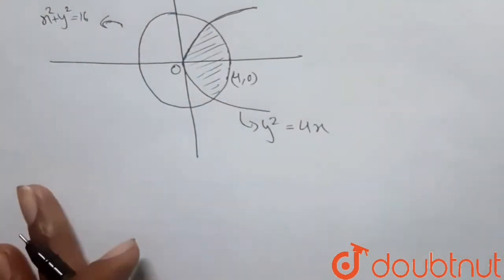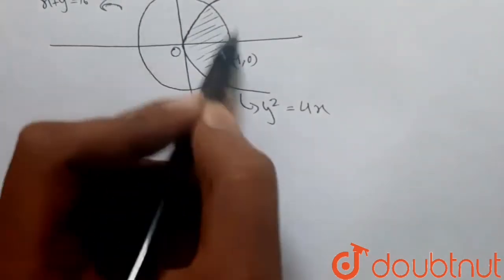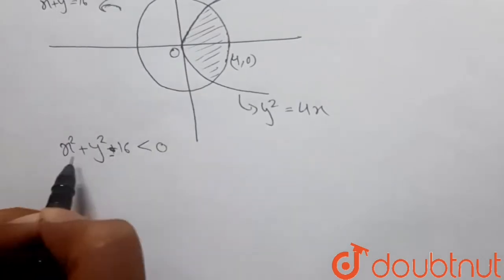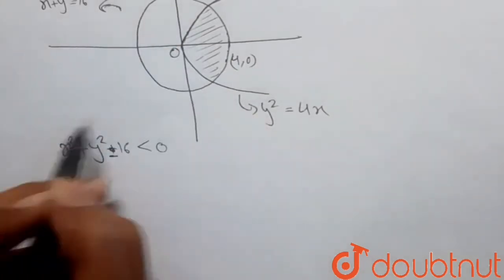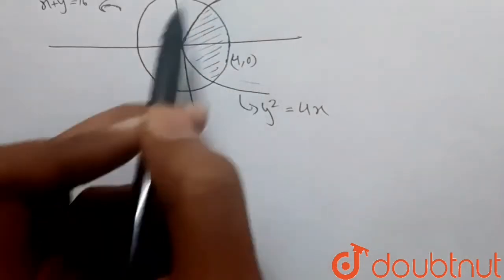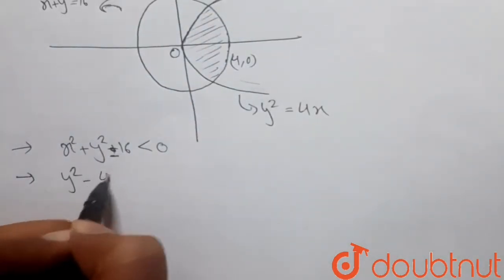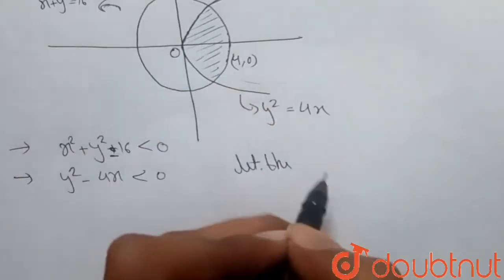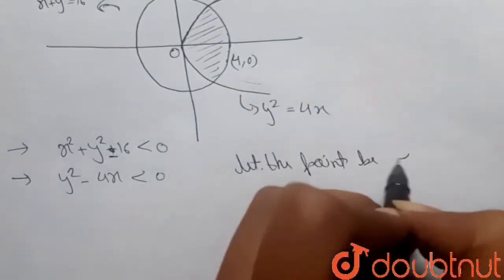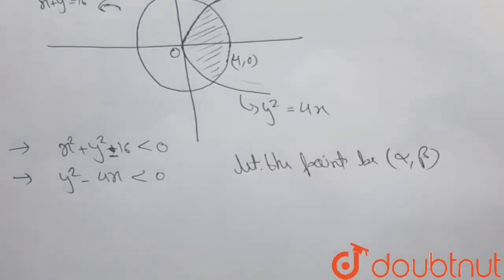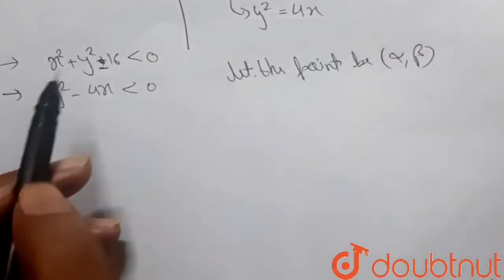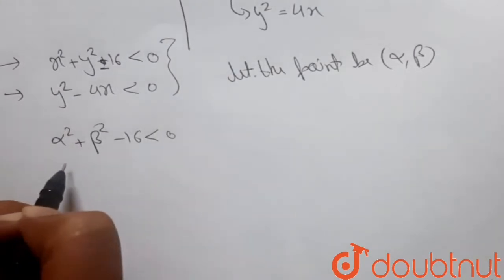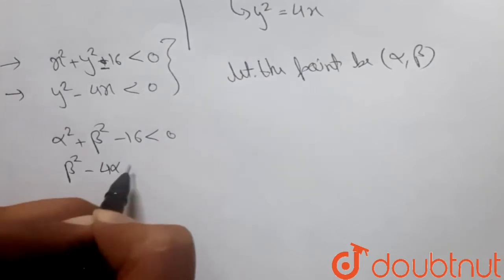This will be our origin. We know that any point which lies inside the circle will satisfy: x² + y² - 16 < 0. Similarly, any point which lies inside the parabola will satisfy: y² - 4x < 0. Now suppose the point which lies in this shaded part is (α, β). So α² + β² - 16 < 0 and β² - 4α < 0.